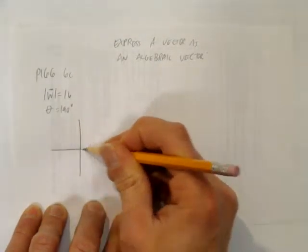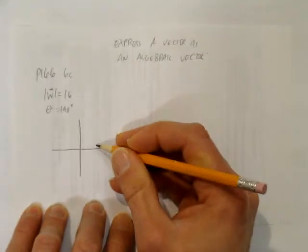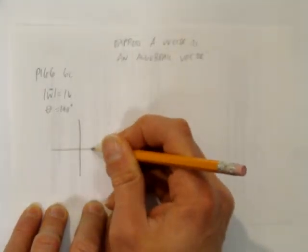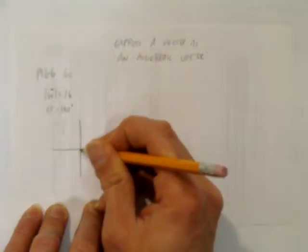So we start with a sketch. And knowing that it's 90 degrees through each quadrant, we know that 190 degrees will take us 90, 180 into quadrant 3.